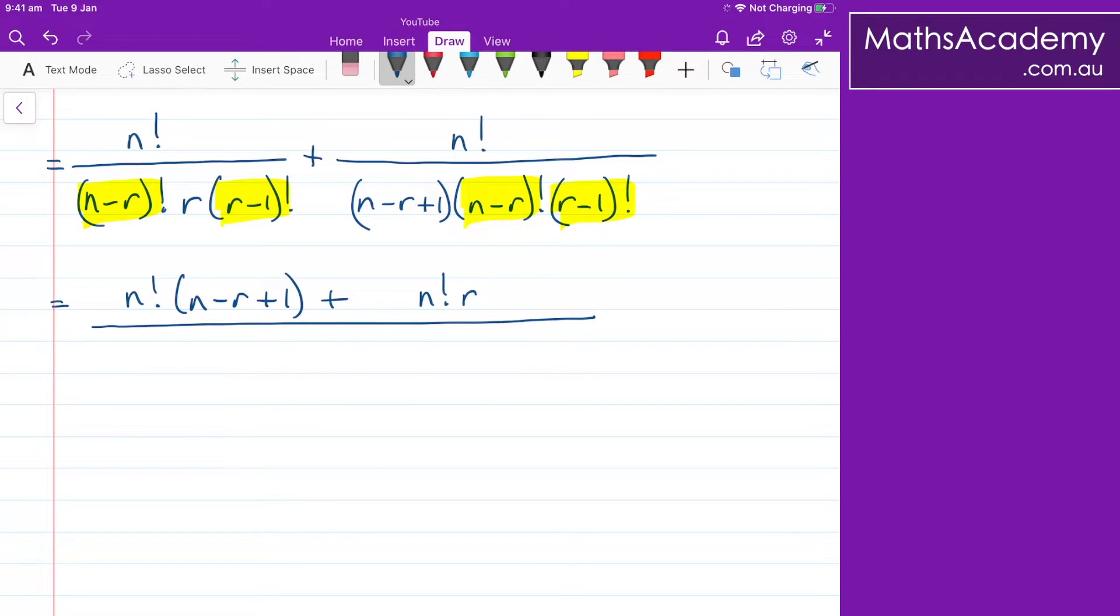Now, all of that is over this common denominator. What is common? Well, what is common is the n minus r factorial, and then I've got the r minus one factorial. And what is left? I've got the r left and I've got the n minus r plus one.